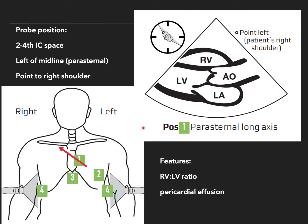The parasternal long axis view is obtained with the probe marker towards the patient's right shoulder, with the probe in the second, third, or fourth intercostal space on the left side of the sternum. In this view I expect to see the right ventricle on top, the left ventricle at the bottom, the left atrium, the aorta, the mitral valve, and the aortic valve. The apex of the heart is not expected to be visible. This view gives an idea of the RV-to-LV ratio, pericardial effusion, and global LV function.